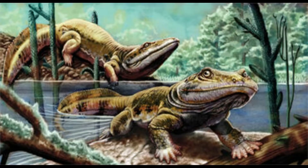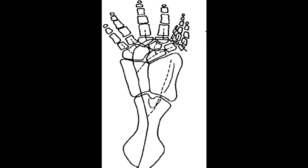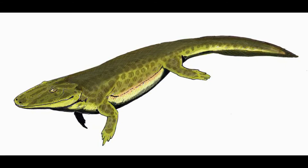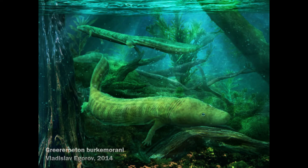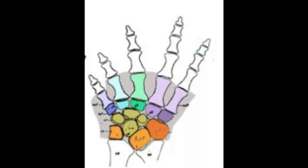Then Ichthyostega with seven fingers, then Tulerpeton which had six fingers. These form a clear line of evolution — there aren't many ways to explain eight fingers on a hand like Acanthostega's.